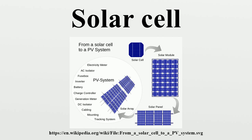The most commonly known solar cell is configured as a large area PN junction made from silicon. Solar cell efficiency may be broken down into reflectance efficiency, thermodynamic efficiency, charge carrier separation efficiency, and conductive efficiency. The overall efficiency is the product of these individual metrics. A solar cell has a voltage-dependent efficiency curve, temperature coefficients, and allowable shadow angles. Due to the difficulty in measuring these parameters directly, other parameters are substituted.